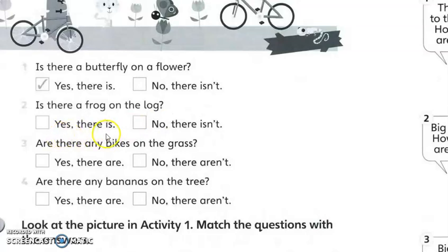Bagikan jawapan. And then you go to number 3. Are there any bugs on the grass? Okay, what is the answer? Here and here. Okay, number 4: Are there any bananas on the tree? Okay, kalau yes, yes there are. Kalau no, no they aren't.